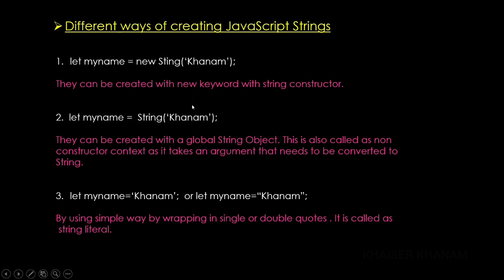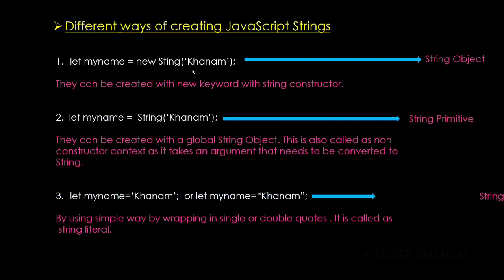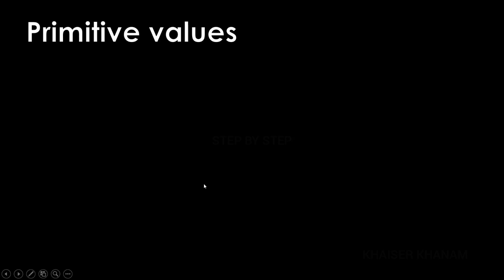All three ways will give the same result — 'khanam', 'khanam', and 'khanam' — but the difference is in the type. The first one using `new String()` is called a string object. The second and third are string primitives. When we use the `typeof` operator, for the first one we get the type as 'object', and for the second and third we get the type as 'string'.